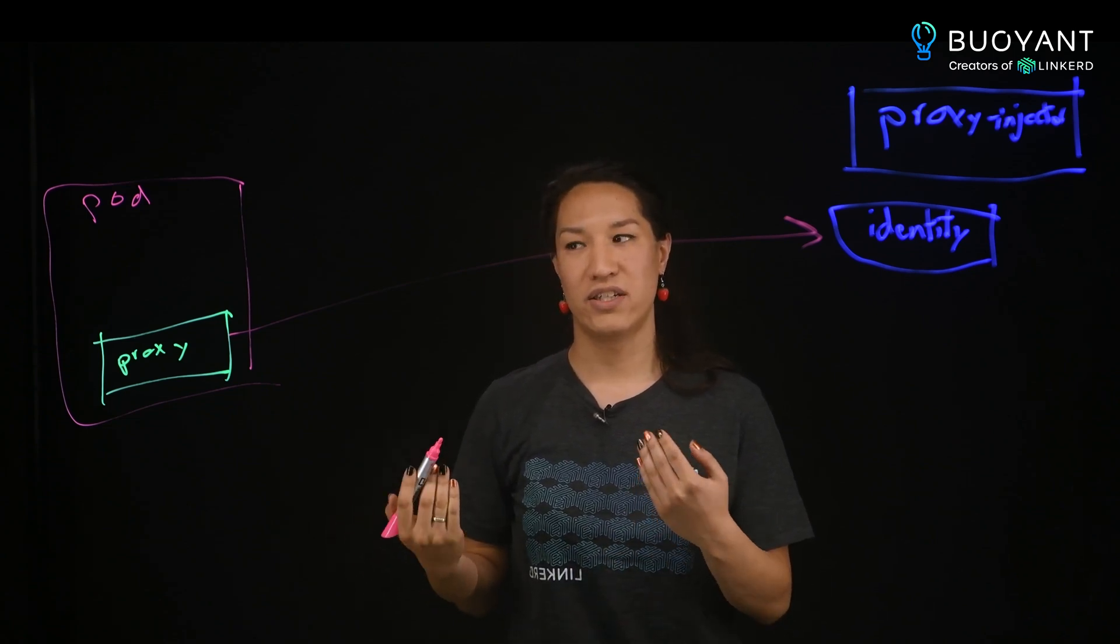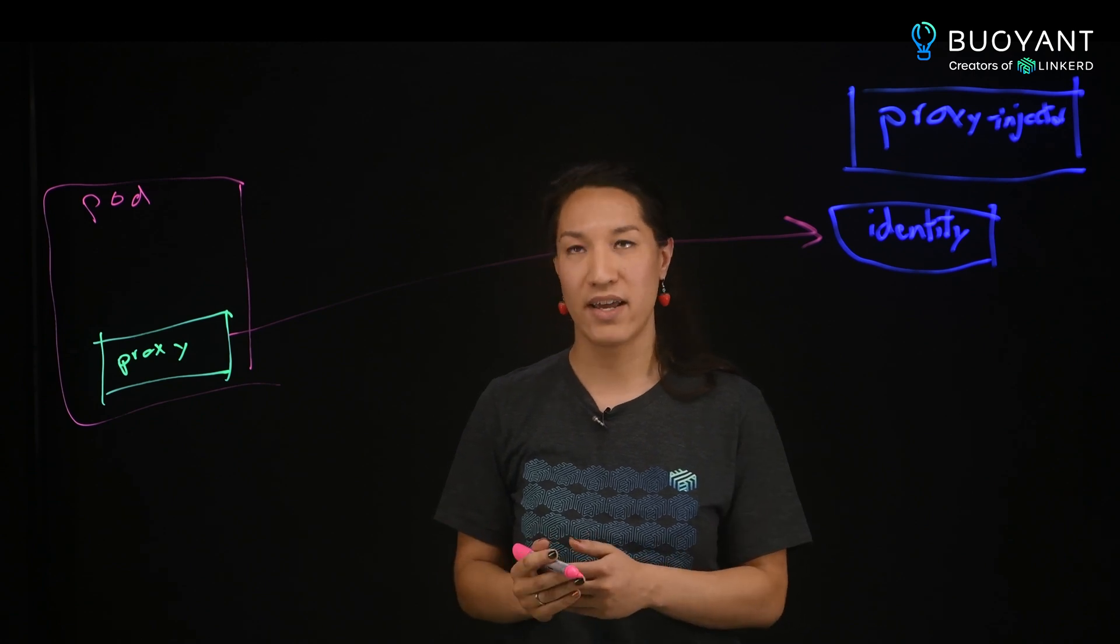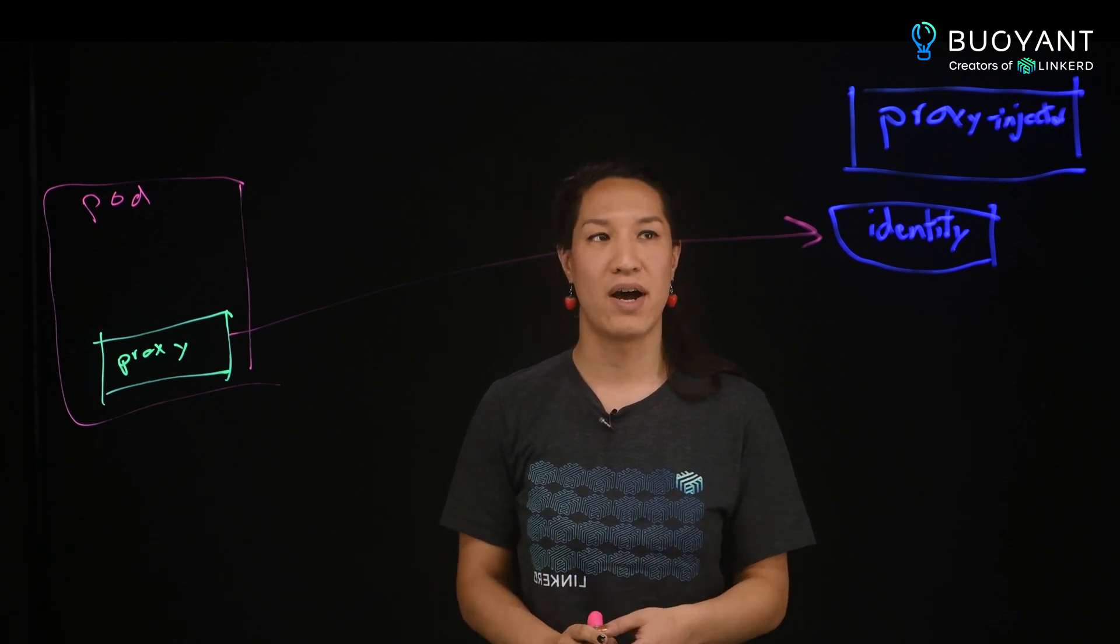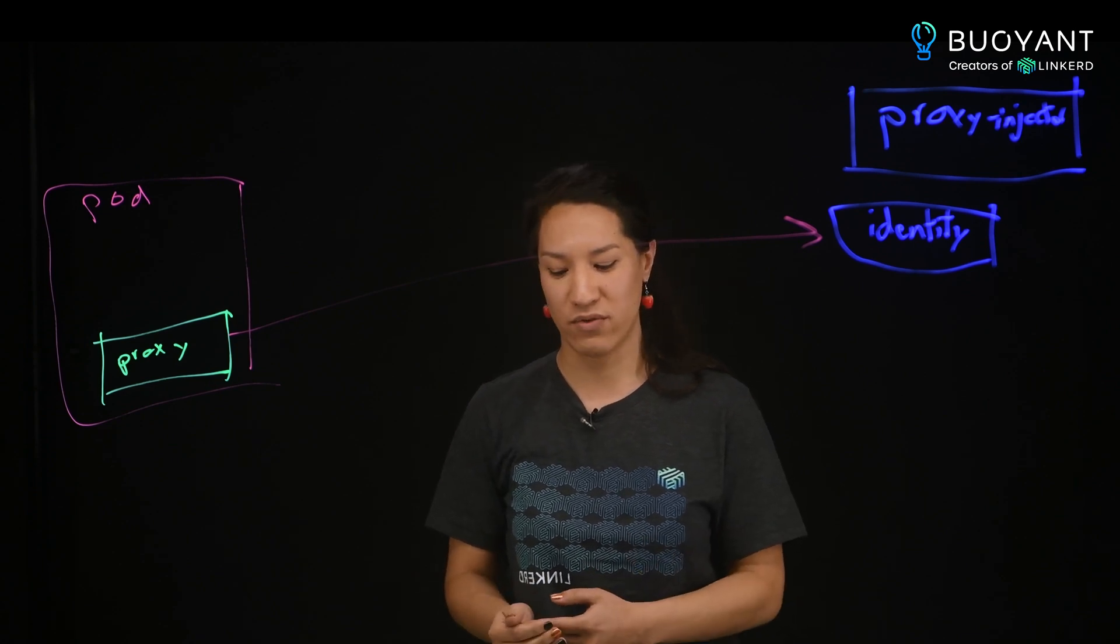Now when a connection is established and goes through that proxy and is forwarded on, the proxy needs some more information about where that request should go and what kind of policy to enforce.